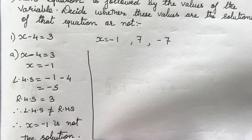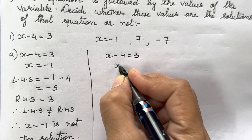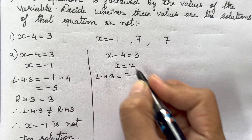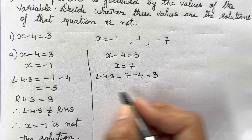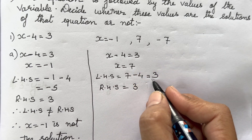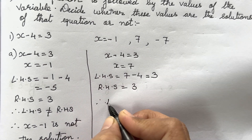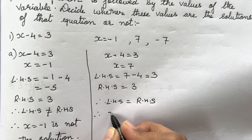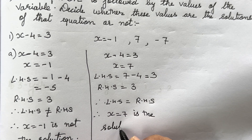Now the second substitution: x = 7. Left Hand Side is 7 minus 4, which equals 3. Right Hand Side is also 3. Therefore Left Hand Side equals Right Hand Side, and therefore x = 7 is the solution.